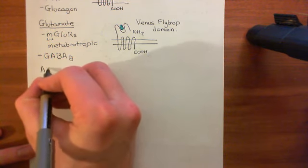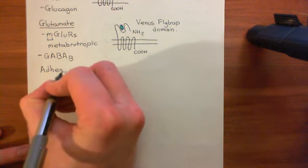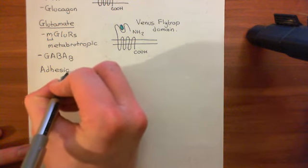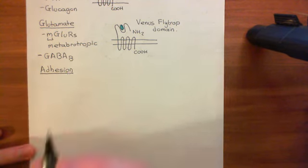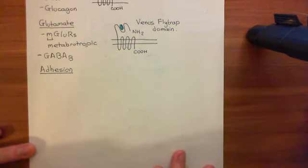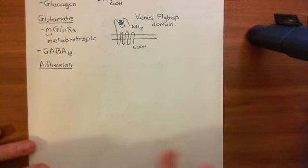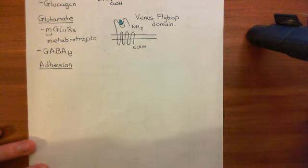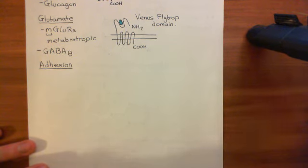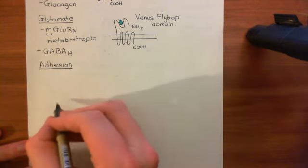Next up is the adhesion family of G-protein coupled receptors. This family is special because the ligand for the receptors within this family is not your conventional idea of a ligand, where it's some free molecule. Instead, it's components of the extracellular matrix.